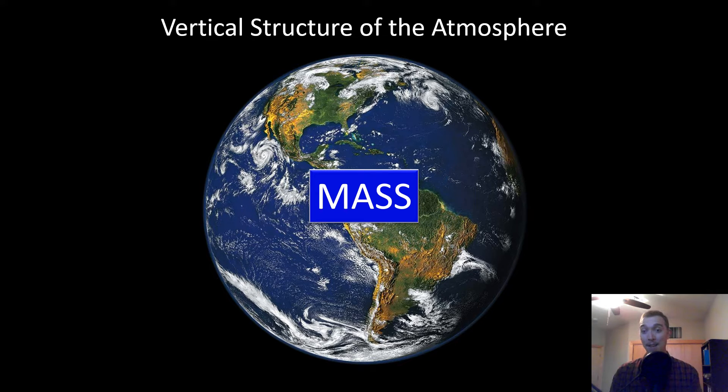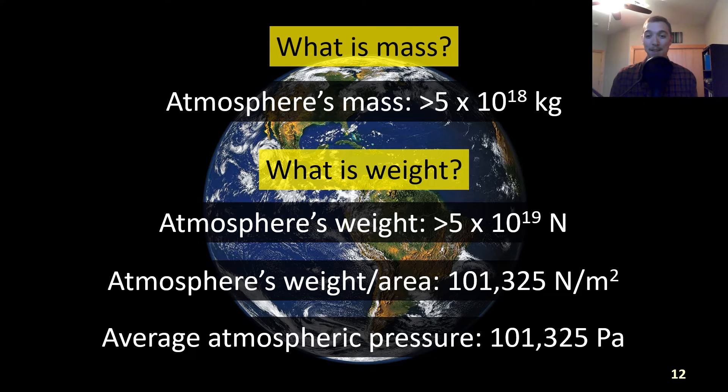Now let's move on to mass. What is mass? Mass refers to the amount of matter an object contains. It depends on what type of atoms the object is made of and how many atoms there are. It's traditionally measured in kilograms. Mass does not change by varying an object's shape, size, or location. The mass of Earth's atmosphere is greater than 5 times 10 to the 18th power kilograms.